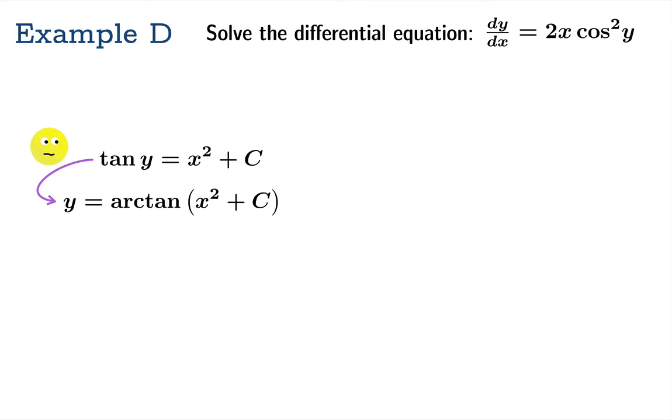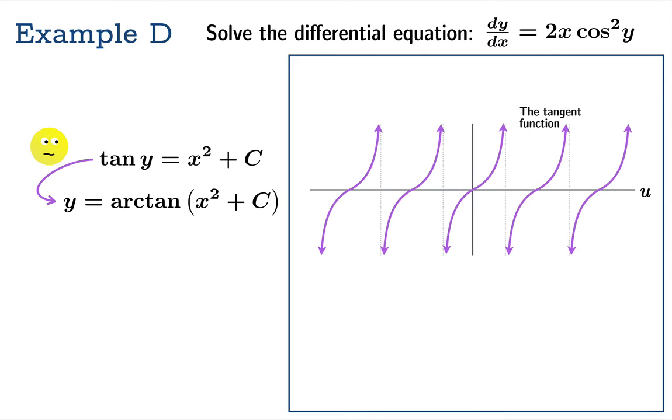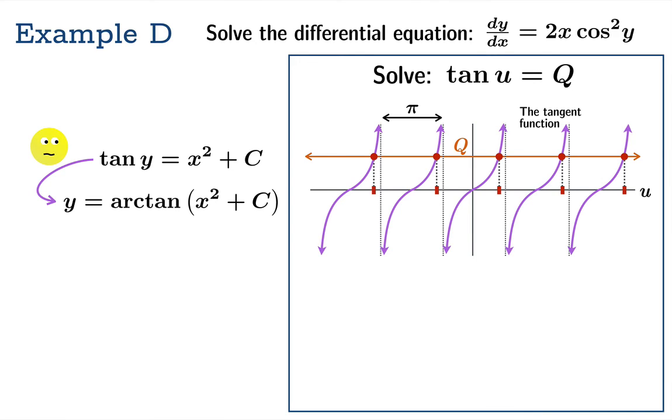Imagine a graph of the tangent function. It's periodic with period pi. Now imagine you're trying to solve the equation tan u equals q. There are going to be an infinite number of solutions. If you can find one, you're going to find an infinite number. How do you find one of them?